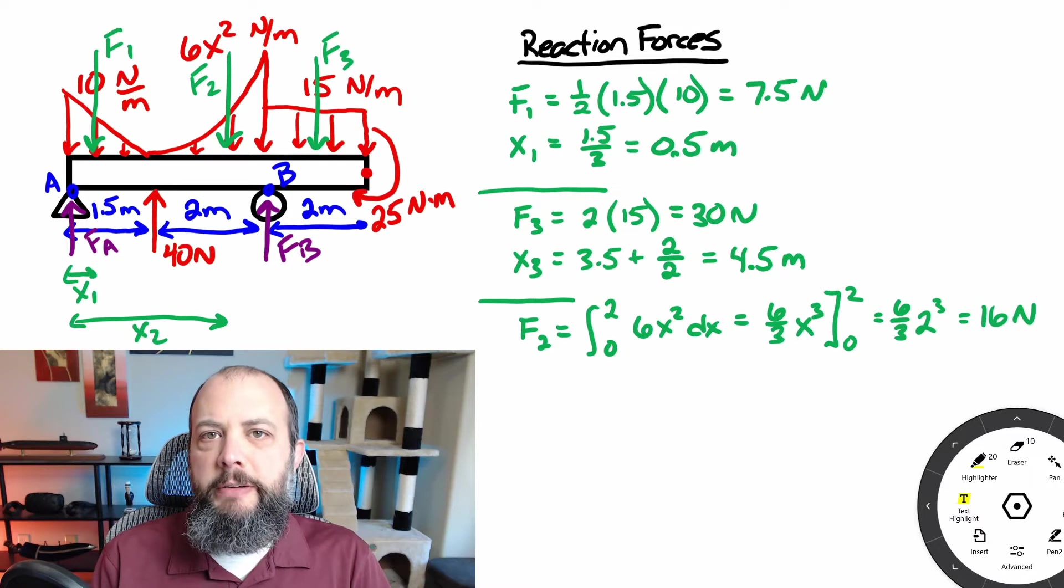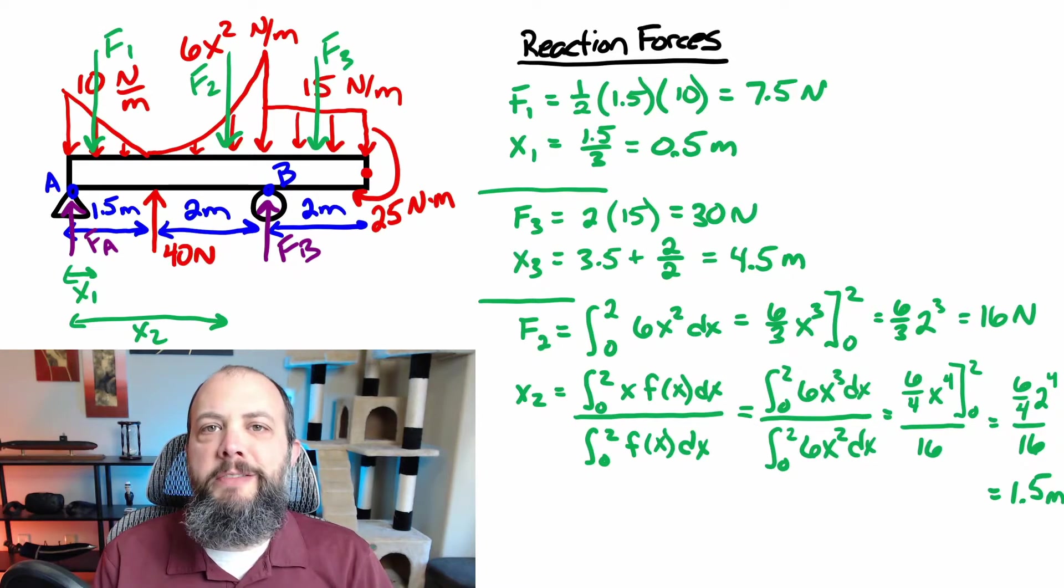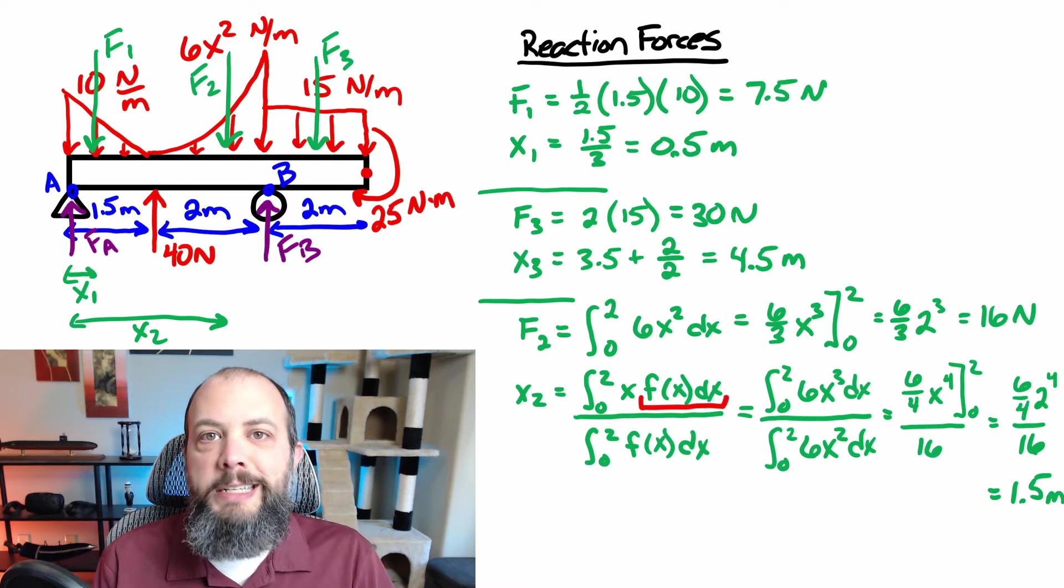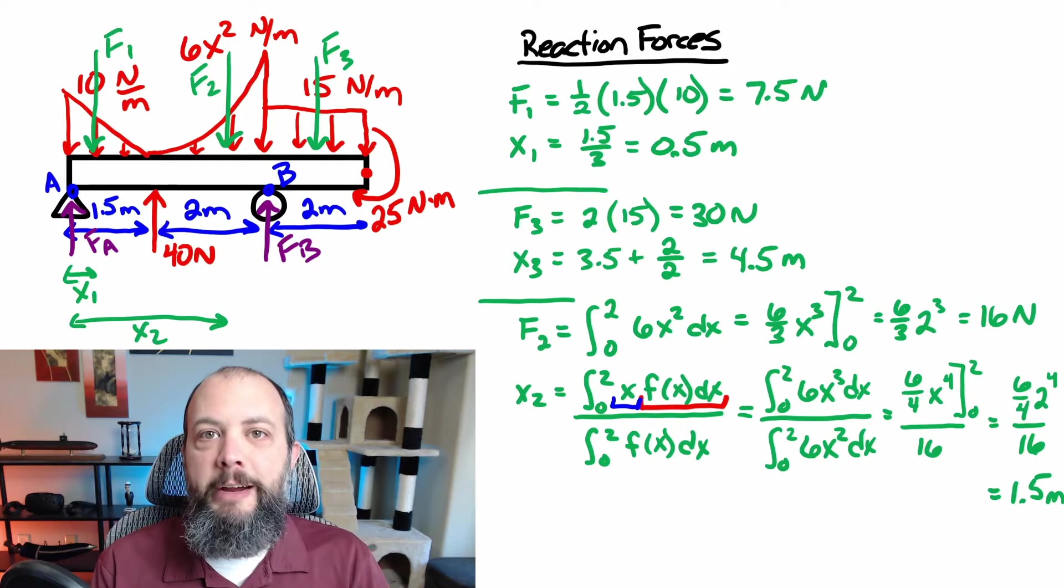For the distributed load represented by a function, finding out the magnitude of the force is the easier part of the two, and that's just the integral, where the bounds of integration are the length of the base, and the function being integrated is the function itself. Finding the location is a little bit more complex. If you think of an integral as Riemann sums, then finding the centroid of this shape is essentially a weighted average of the location of each of those Riemann sums. And a Riemann sum is a rectangle with height f of x and base dx. And so this red underlined section is the area of each rectangle of the Riemann sum. Then this blue underlined x is the distance of this Riemann sum from zero. So by adding together all of these distance times areas, and then by dividing by the total area, that gives you a weighted average, which ends up being the centroid for the shape.